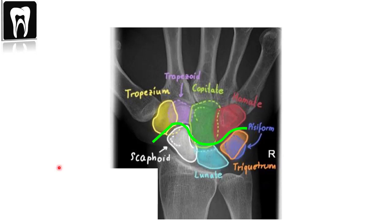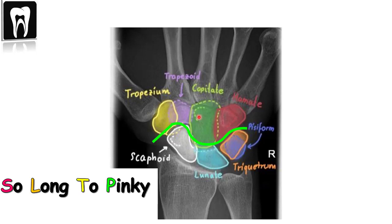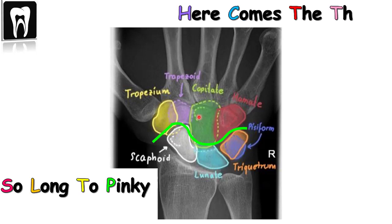The eight carpal bones are: scaphoid, lunate, triquetrum, pisiform, hamate, capitate, trapezoid, and trapezium. The capitate is the captain, or the head of the family — the largest bone, and it is in the middle. To remember the bones, you can use the mnemonic 'So Long To The Pinky, Here Comes The Thumb.' This helps you remember the orientation of the bones and how to label them.